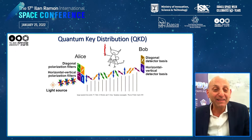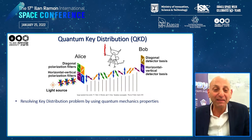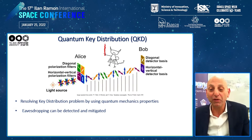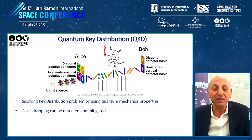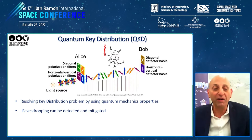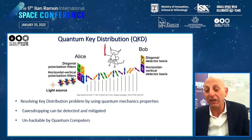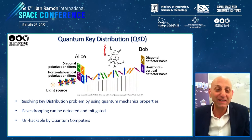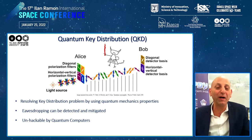The interception of qubits by an eavesdropper will cause errors in the sequence of data exchange. By checking for the presence of such errors, the two parties can verify whether an eavesdropper was able to obtain information on their key. This feature provides unconditional security for communication and also resilience from any future advances in the hacking of systems, which can be deployed, for example, by a quantum computer.